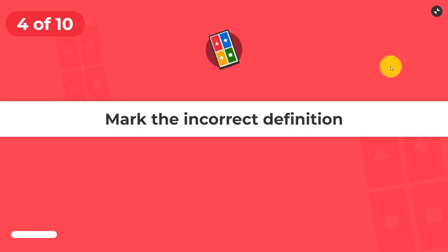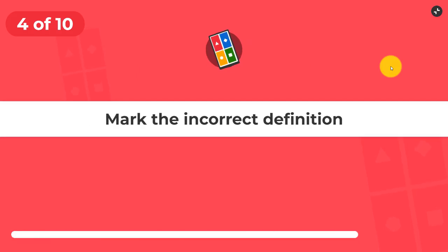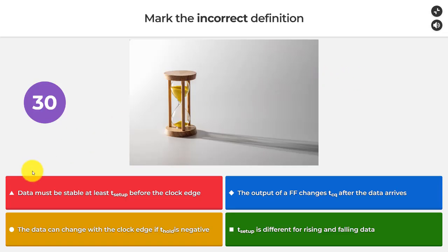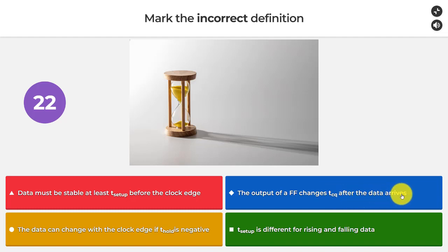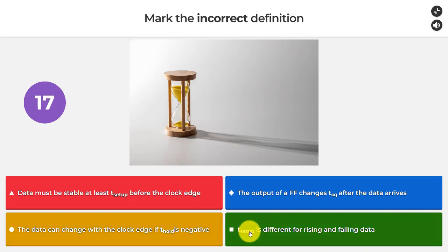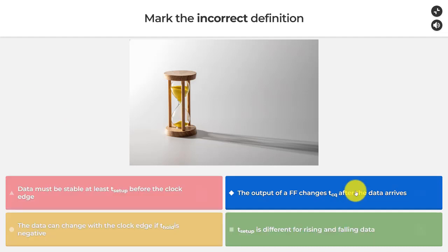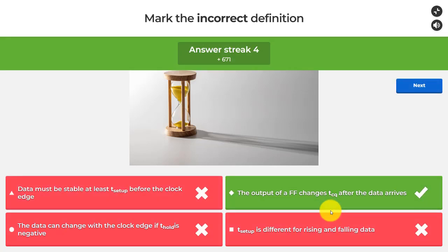Question number four: mark the incorrect definition. Data must be stable at least Tsetup before the clock edge. The output of a flip-flop changes Tcq after the data arrives. The data can change with the clock edge if Thold is negative. Tsetup is different for rising and falling data. The answer that is incorrect is: the output of a flip-flop changes Tcq after the data arrives.